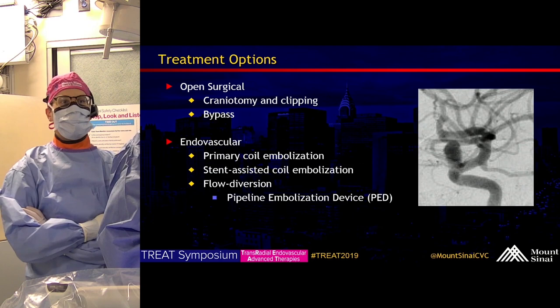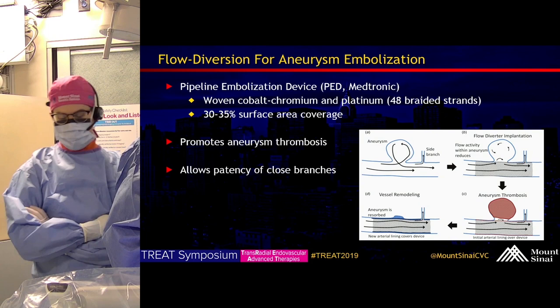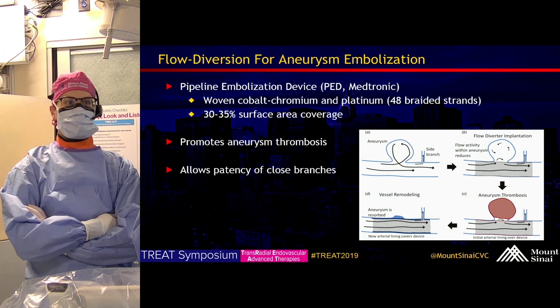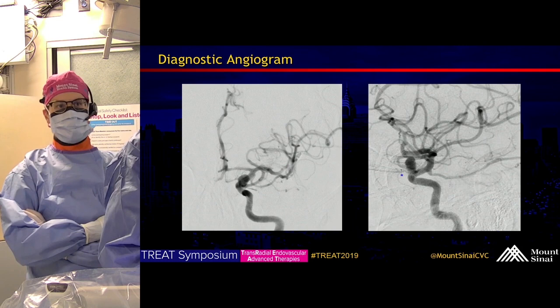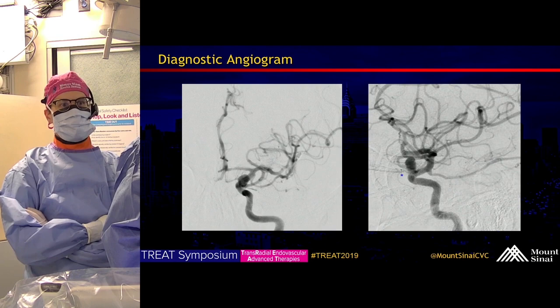The pipeline device is specifically designed to promote thrombosis within the aneurysm dome while allowing side branches to remain patent. We chose this because the ophthalmic artery comes out directly near the origin, or the neck, of the aneurysm. So it's important to leave that patent during the case and afterwards.